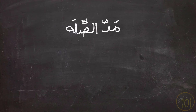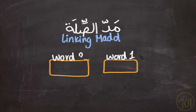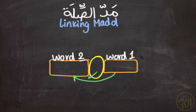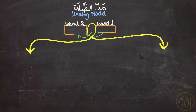Let's start by knowing what Mad As-Sila actually means. The simplest definition for the Linking Mad is that it is a type of Mad that occurs only between words. This Mad is neither part of the first or the second word — it only happens when you link between the two words. There are only two symbols for the Linking Mad: U and E, and these symbols should be familiar to you since we've seen them before with the Natural Mad.